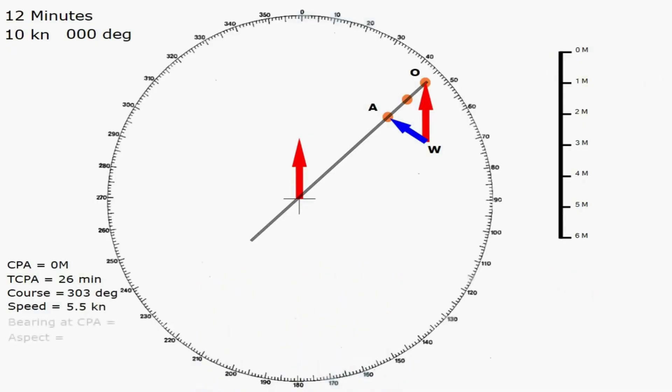The next things we want to find are the bearing at the closest point of approach and the aspect. Now, in this particular example, where the closest point of approach is 0, there is no bearing. So, that one is actually irrelevant. If the closest point of approach was, say, a mile, then we'd want the bearing to where the vessel would be when they were 1 mile off us. But we'll cover that when we look at a more advanced plot.